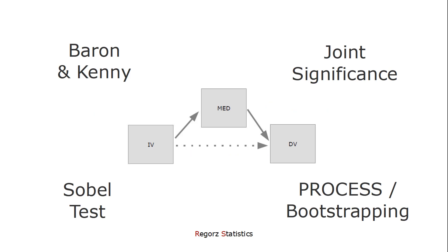There are many approaches to test for mediation. In this video, I'll talk about four of them. The classical causal steps approach by Baron and Kenny, the joint significance approach, the Sobel test, and bootstrapping, most often used in the PROCESS macro by Hayes.